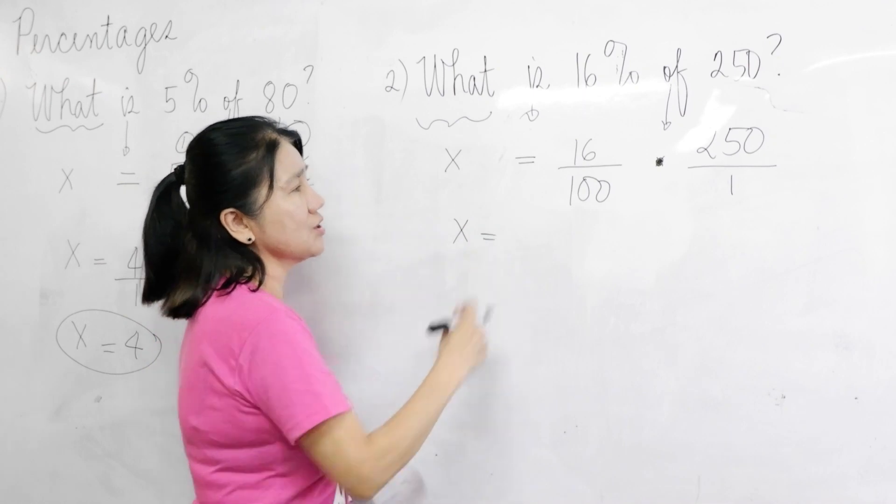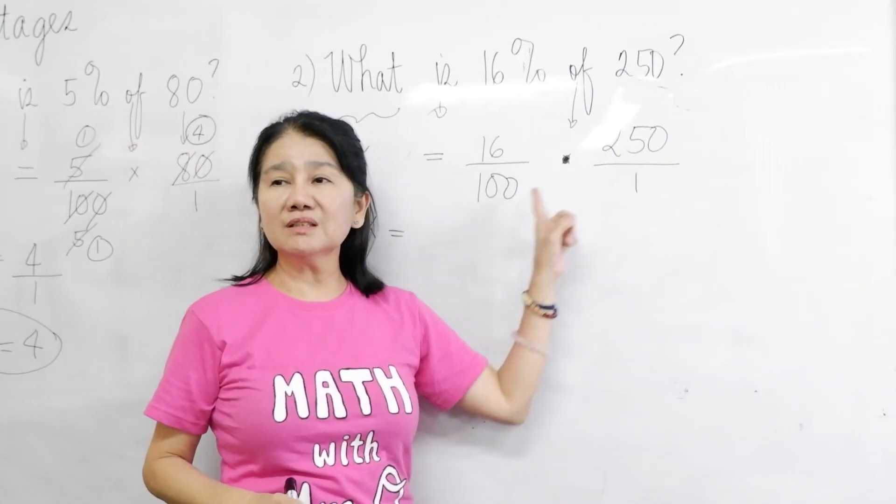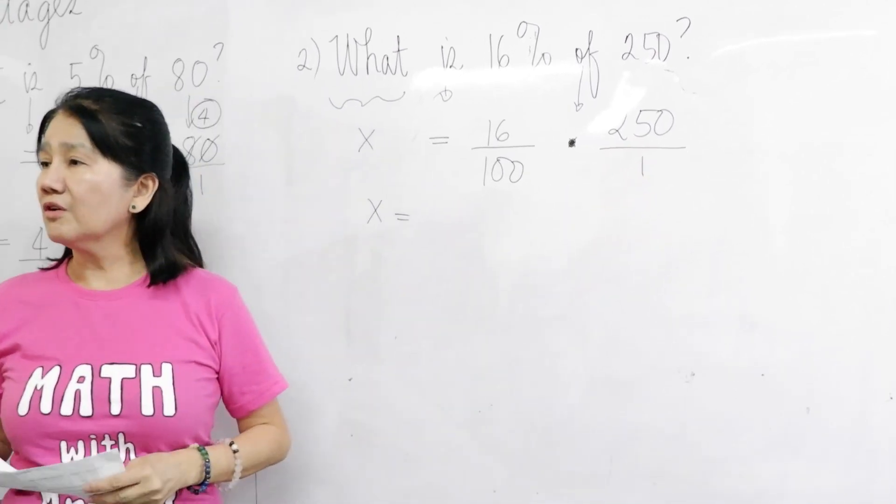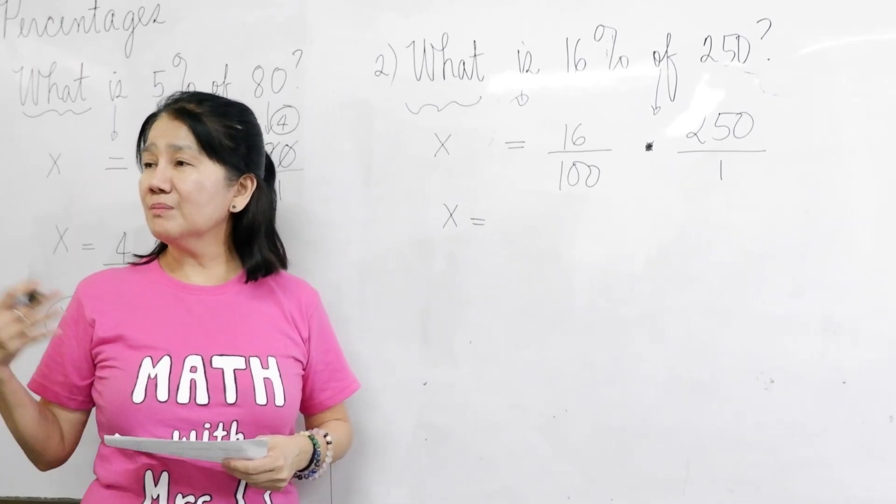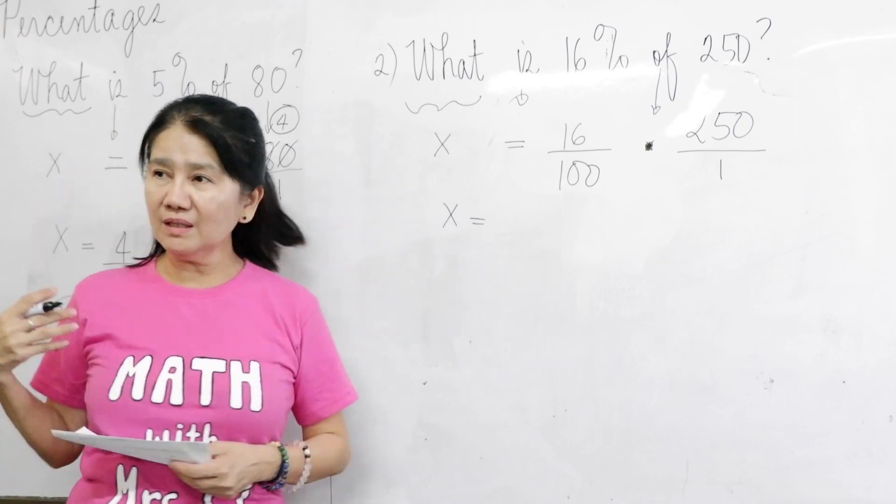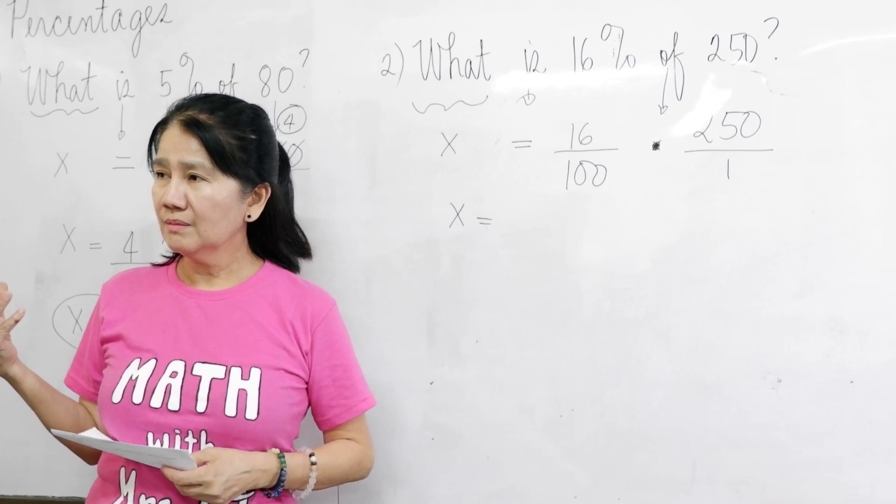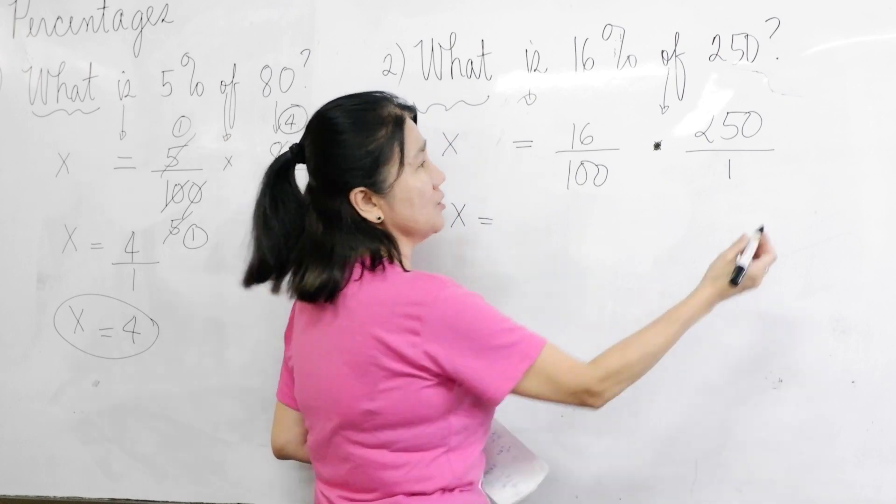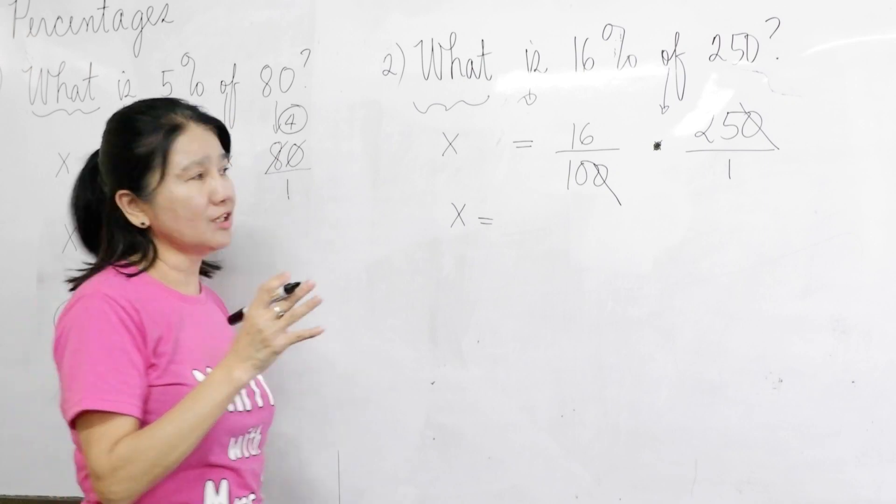Now, is there anything which you think can be canceled here? Yes. What are these numbers? Oh, Thomas, what numbers can be canceled? 50. 50. 50? You can divide 100 and 250. Oh, 250, yes. So, to make things easy, you can cancel the two zeros first. Right? So that you are now decreasing the number.